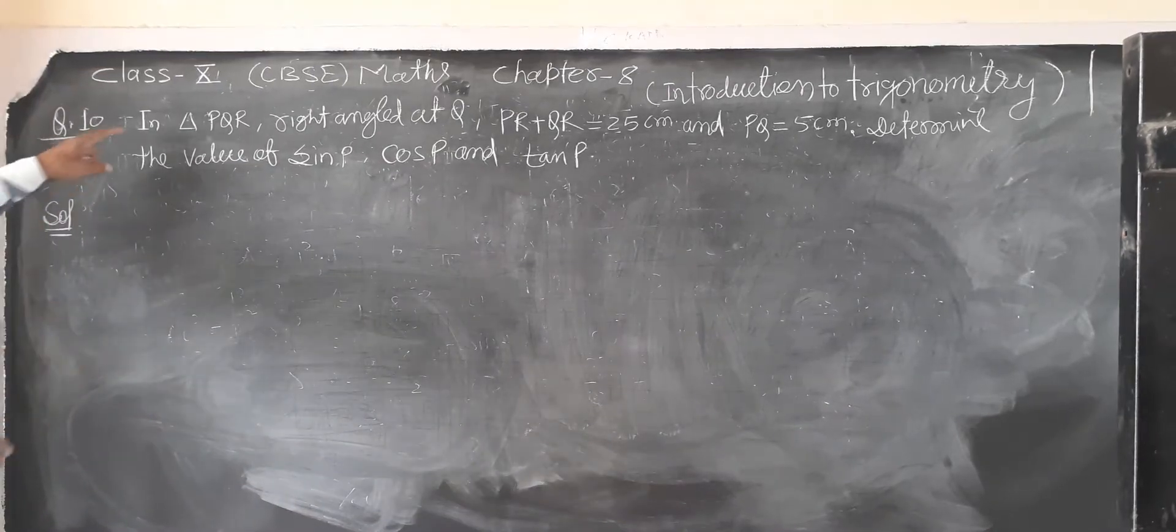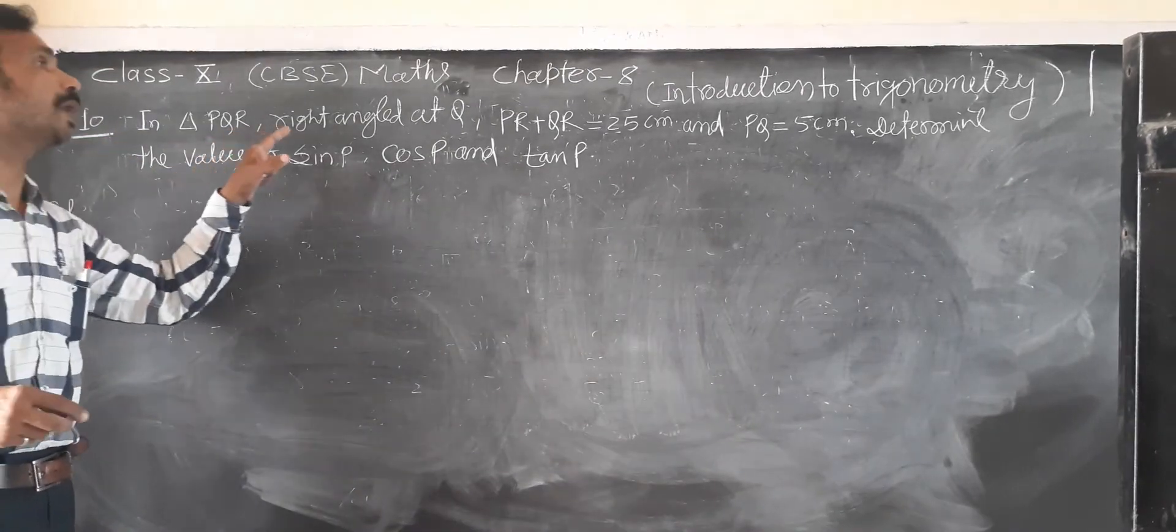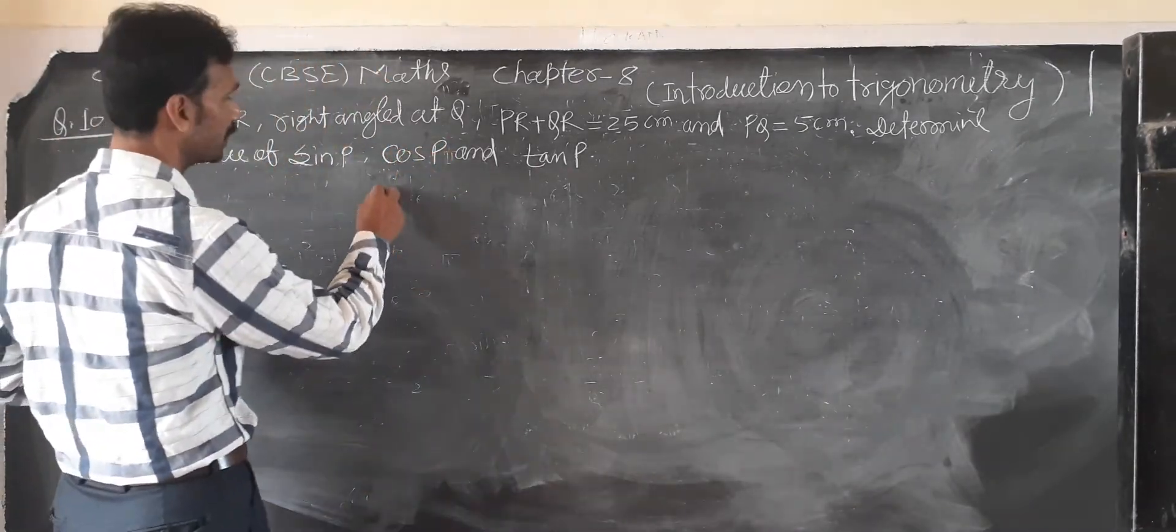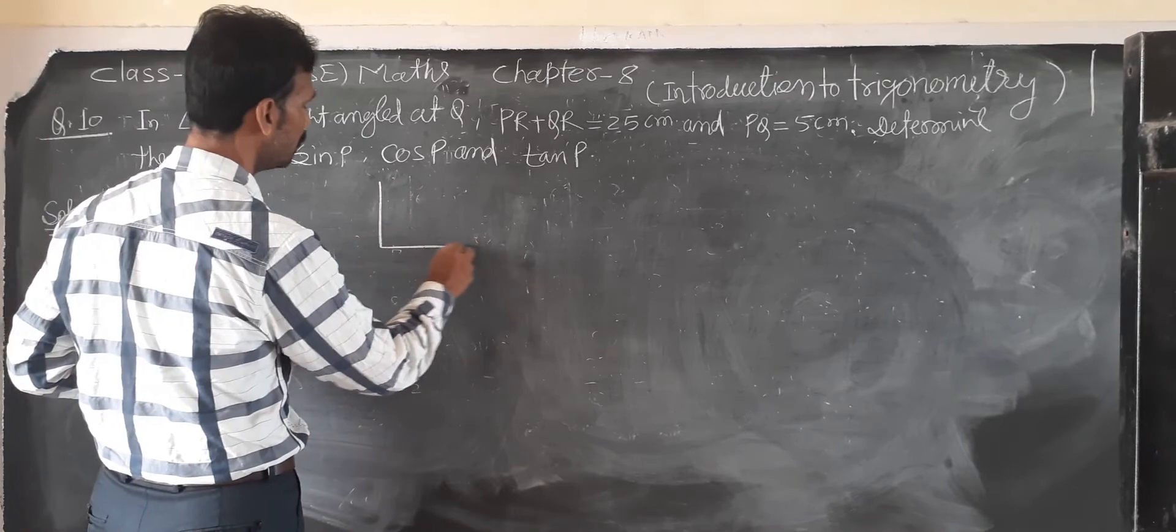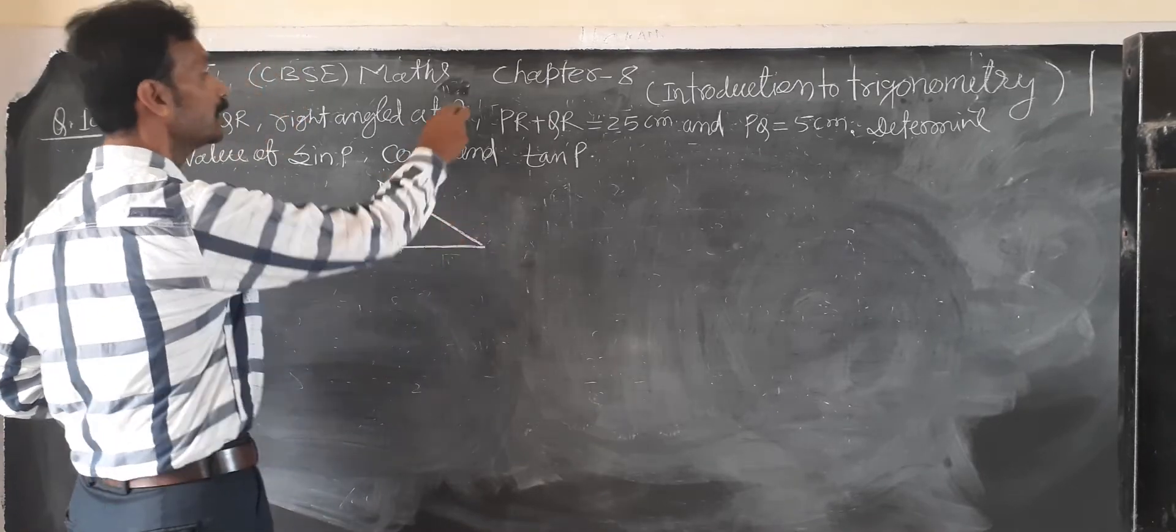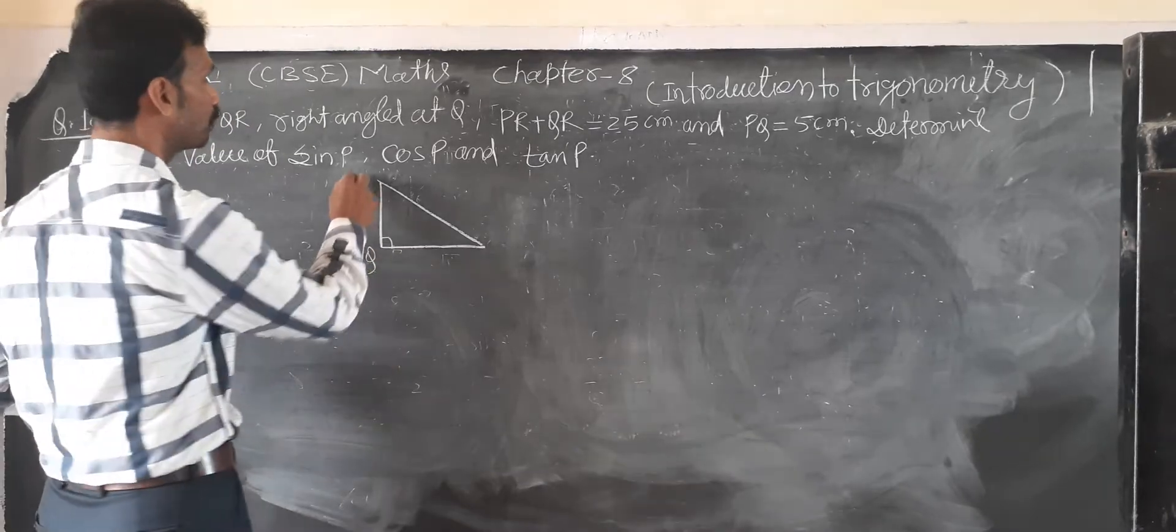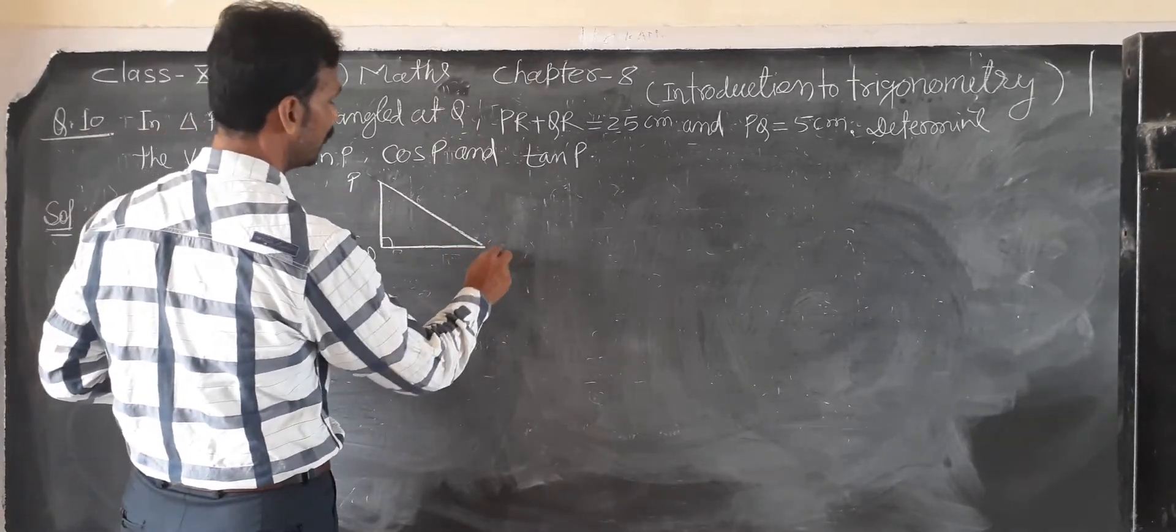Question number 10. In triangle PQR, right angle at Q. PQR means right angle at Q, so this is right angle. This is Q, and P and Q, and this is R.